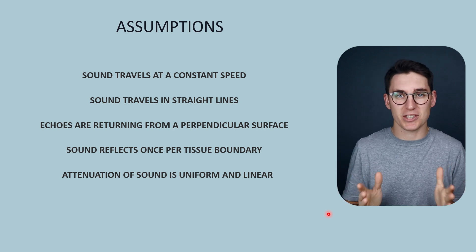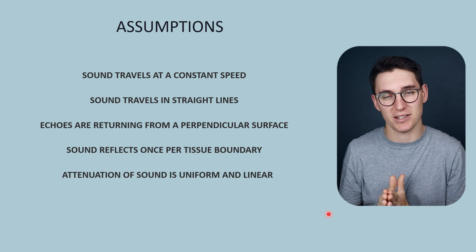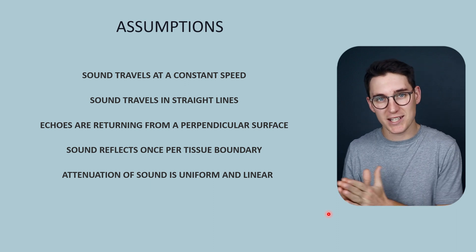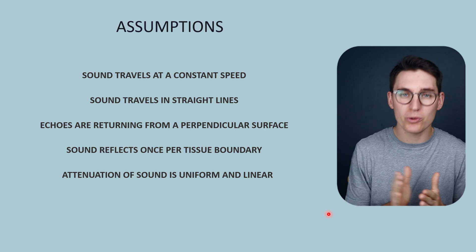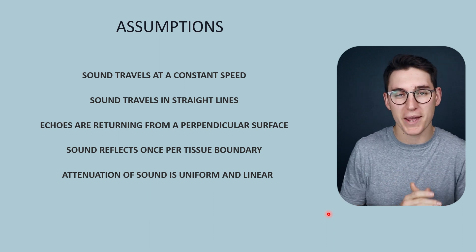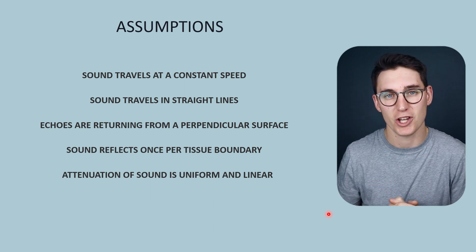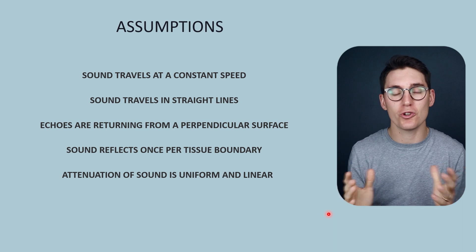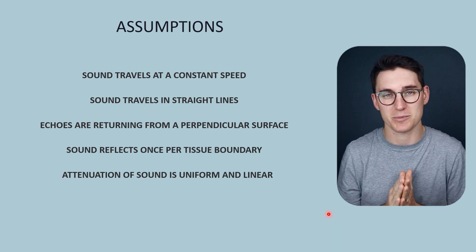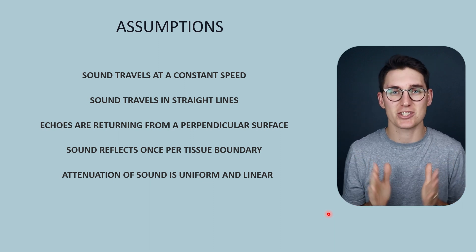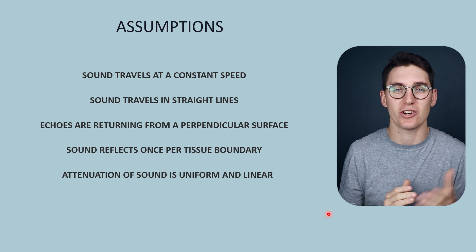The first assumption that the machine makes is that sound travels at a constant speed. We've seen that sound actually travels at different speeds through different tissues depending on the bulk modulus and the density of those tissues. We just assume that sound travels at 1,540 meters per second in soft tissue — we know that's actually not the case.